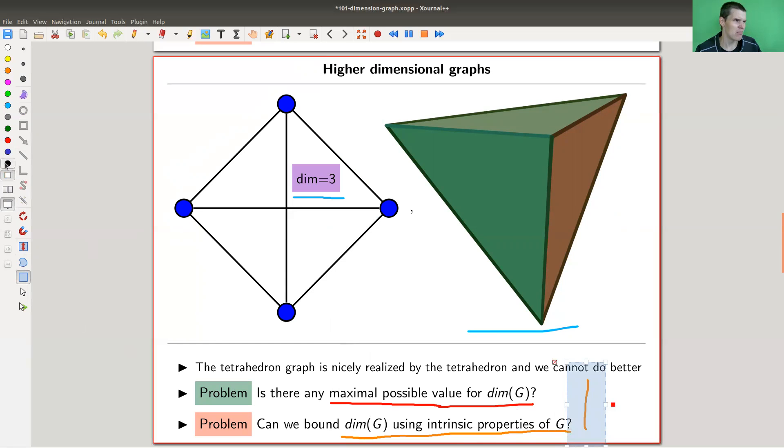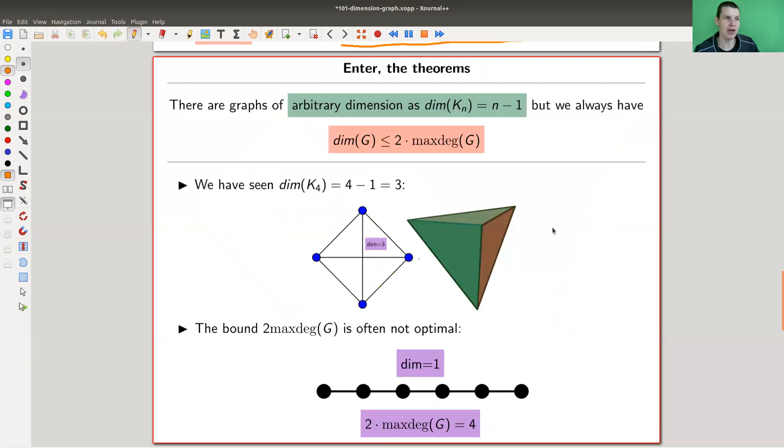So the question that comes to mind is, is that kind of a possible maximum value? Or can the dimension get as crazy as you want? So can graphs be arbitrary dimensional? Maybe four space is enough and all graphs fit nicely into four space? Who knows? So is there a maximum possible value for the dimension? Seems to be unclear. And maybe even more important, can we somehow bound or say anything about this number using some intrinsic properties of the graph, something related to vertices and edges and their connections?